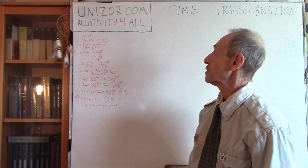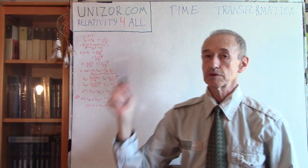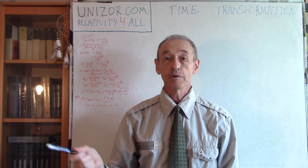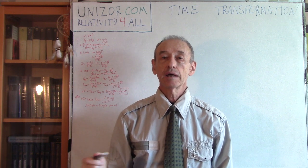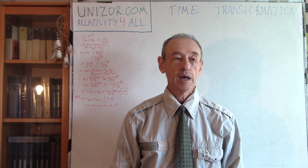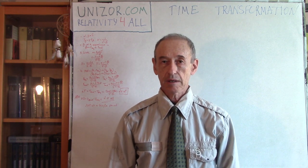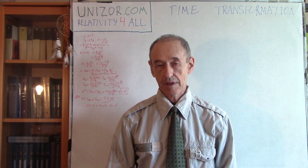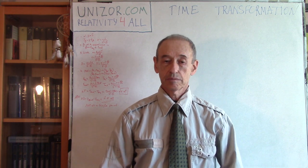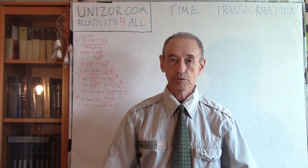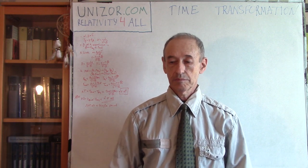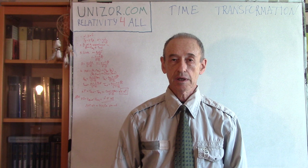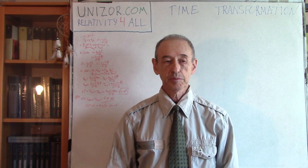This lecture is part of the course called Relativity for All, presented on unizor.com. On the same website you can find two prerequisite courses: Math for Teens and Physics for Teens. Both mathematical and physical knowledge are mandatory to understand the theory of relativity, so either you take those courses or you may already have the proper knowledge. In any case, these prerequisites are available on the website.